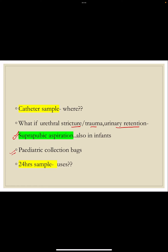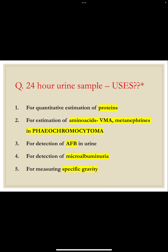For pediatric patients who cannot voluntarily void urine, pediatric collection bags are used. The last method is the 24-hour urine sample. It is used for: quantitative estimation of protein, estimation of amino acids like vanillylmandelic acid and metanephrines in pheochromocytoma, detection of acid-fast bacilli in urine, detection of microalbuminuria in diabetes mellitus, and measuring the specific gravity of the sample.